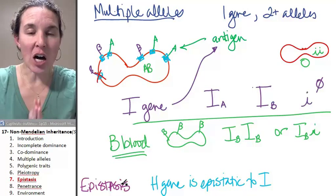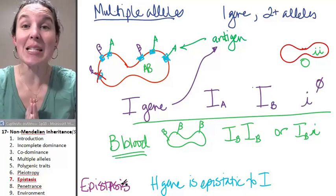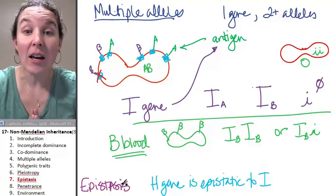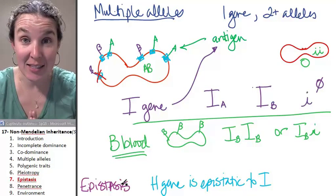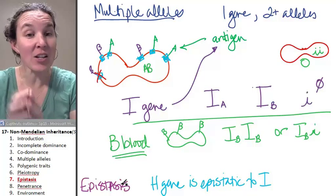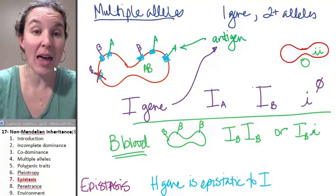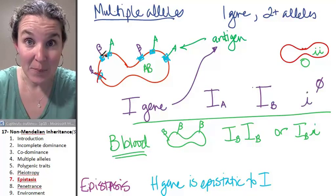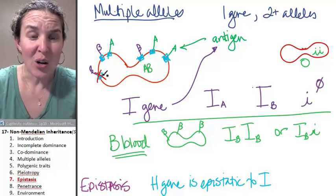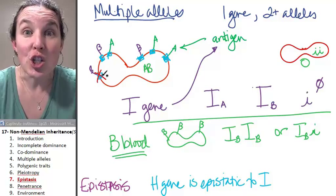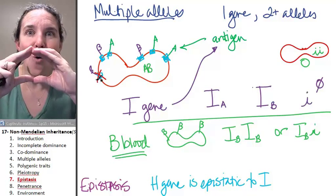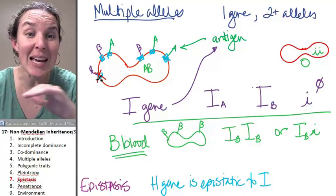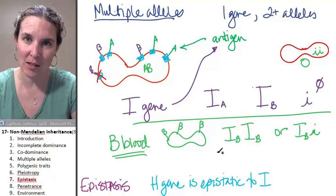If it's a nonfunctional H, it doesn't matter what the I gene says. The I gene can say, you got to rock the A antigens and B antigens in this red blood cell, who cares? You're going to show an O phenotype, because those antigens can't stick in the red blood cell wall.